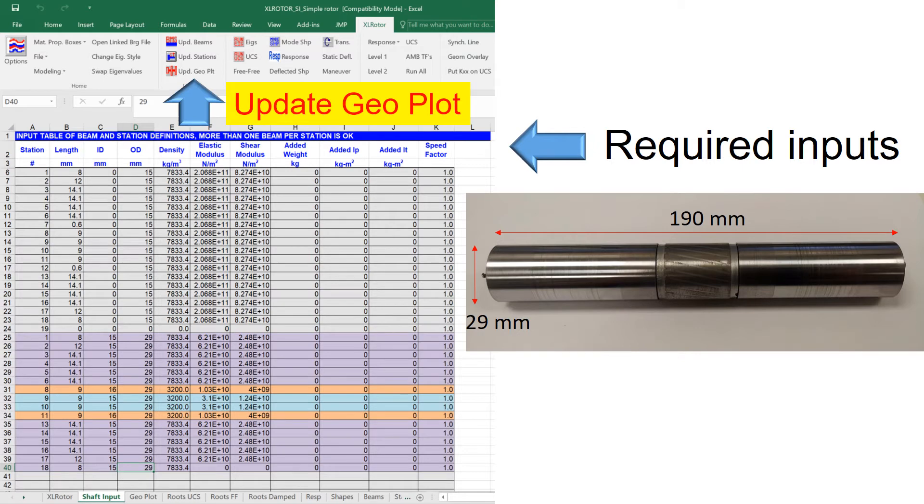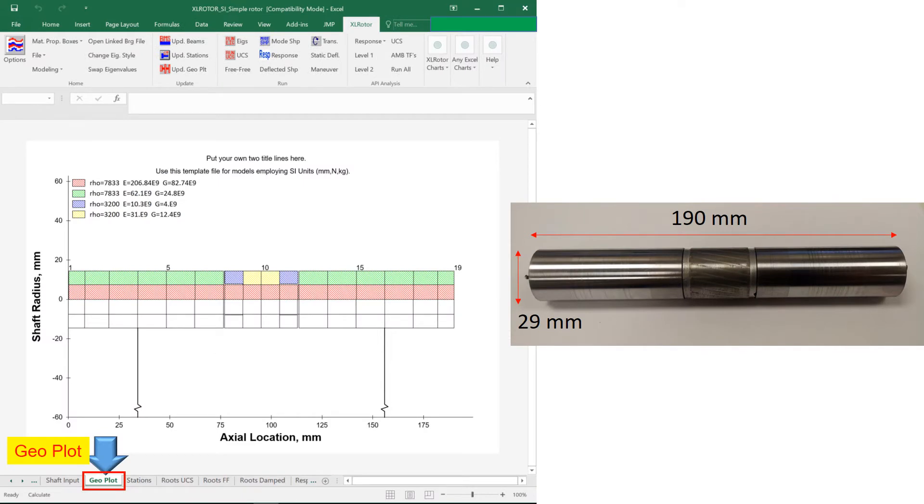Once you put all your geometry information, press update geometry plot in the command tab. Then the software builds up the rotor geometry which looks like this on the left figure. From here you could perform multiple analysis.